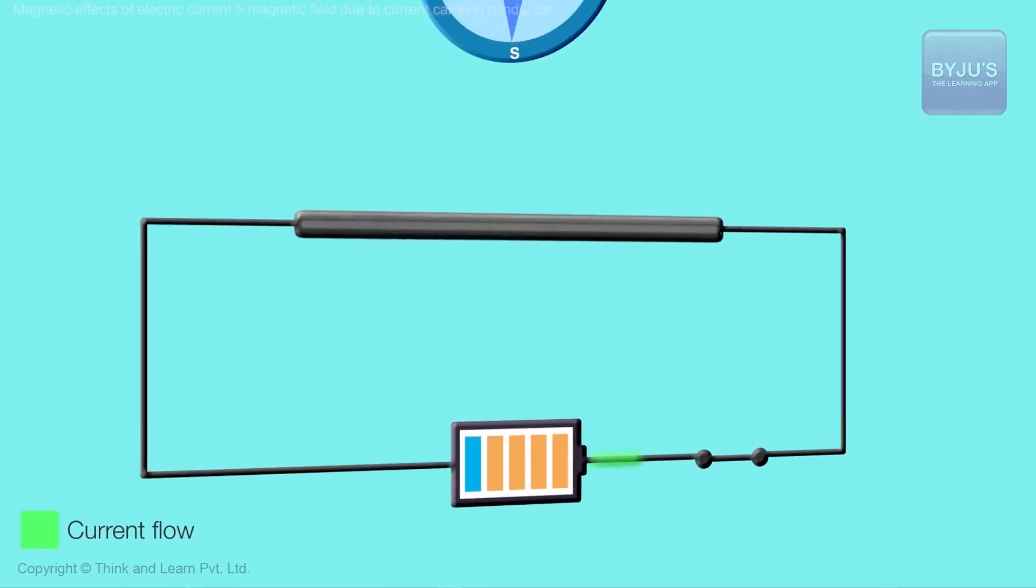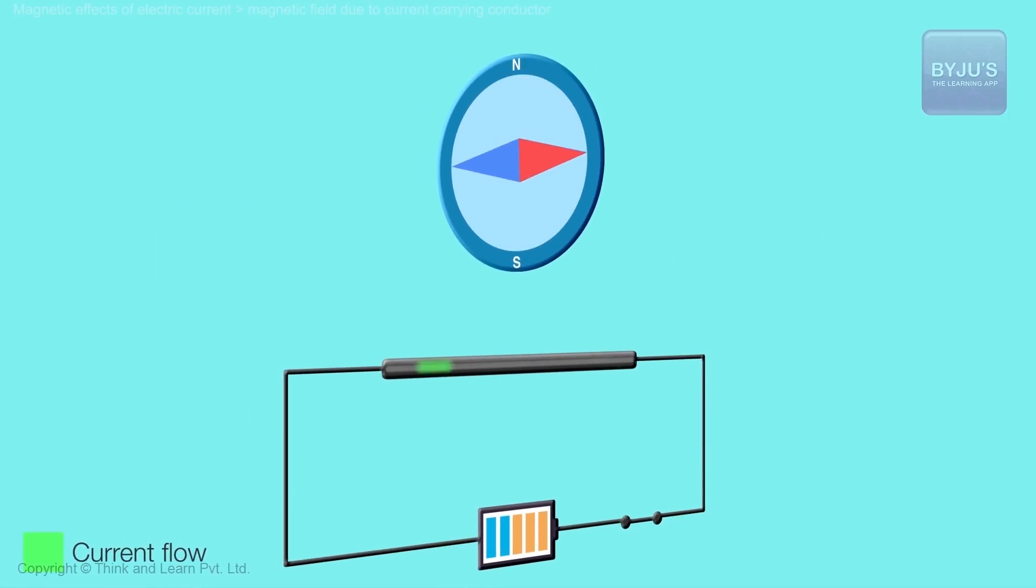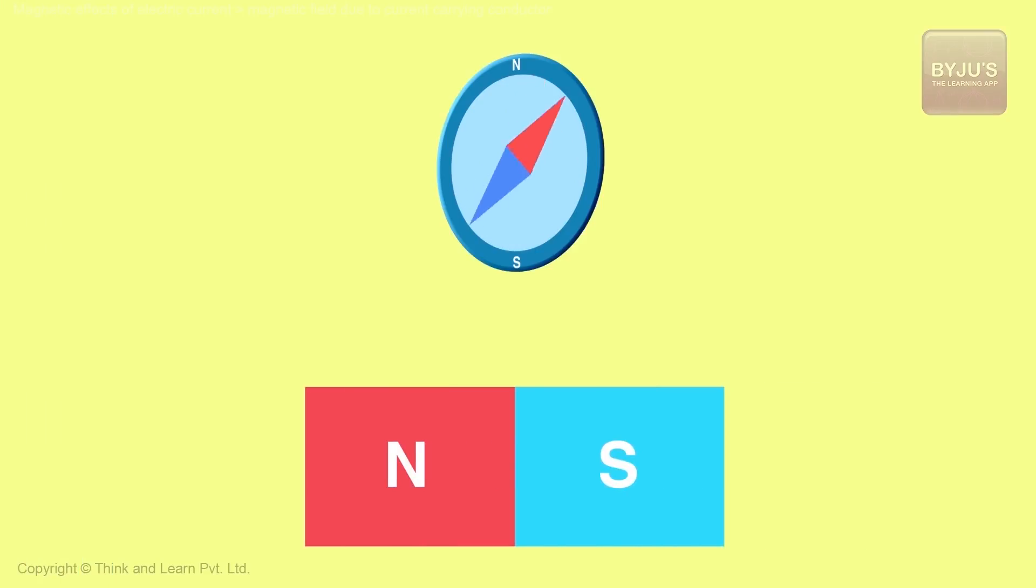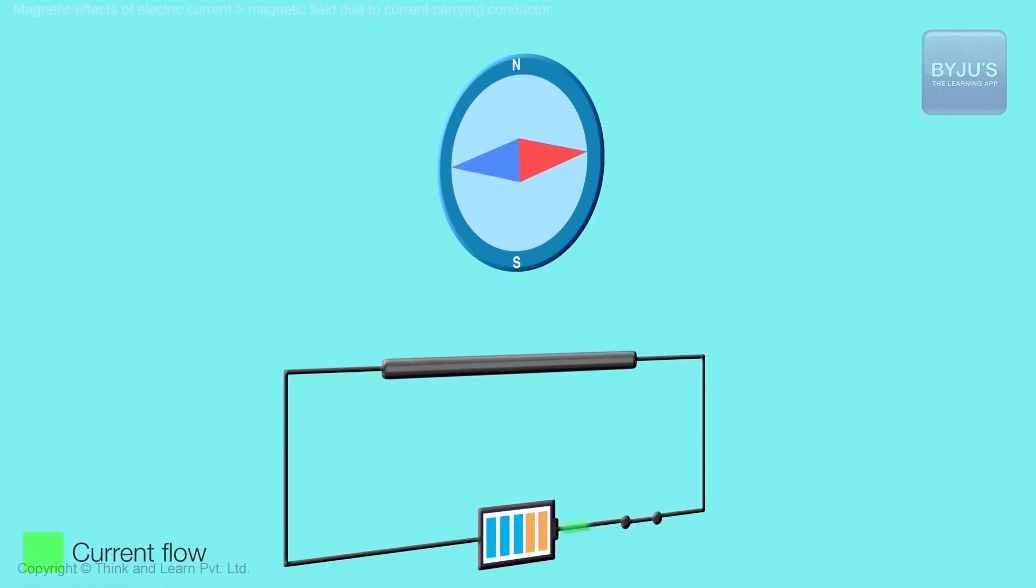All of a sudden he noticed that the compass needle next to this wire started to turn. And that was not expected. We all know that this happens when you take a bar magnet next to it, but there is no bar magnet here. There is a wire carrying current and this magnetic compass is beginning to turn next to that wire. So this was very fascinating.